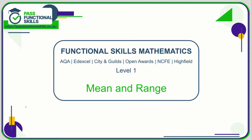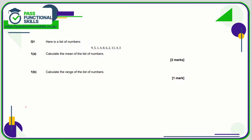Let's take a look at the mean and range questions. Question one is a non-calculator question — we need to work out the mean of this list of numbers. What we need to do is add these numbers together and divide by the number of values. In total there are one, two, three, four, five, six, seven, eight, nine, ten values.